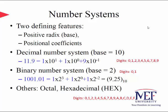Let's briefly introduce number systems. Number systems are defined based on two features: the positive radix or base, and positional coefficients. In some of the literature, number systems are also referred to as positional systems.